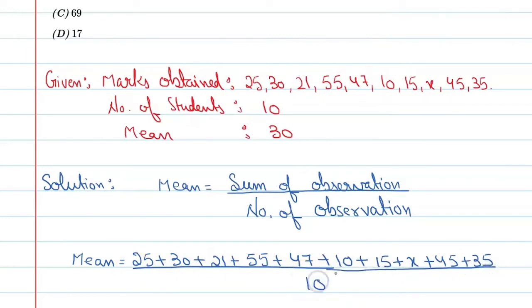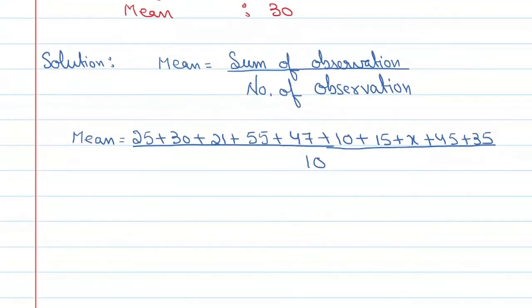So you can write in this form. Then you will get mean is equal to 30. Put it here. The sum is 283 plus x upon 10. Shift 10 to the other side, so it is 300 equal to 283 plus x.